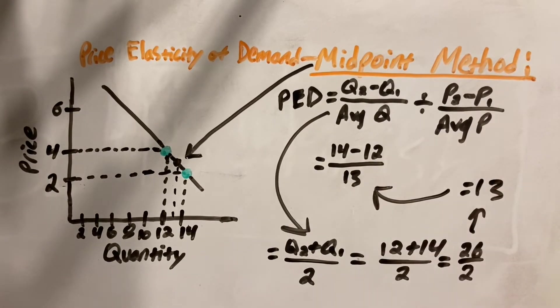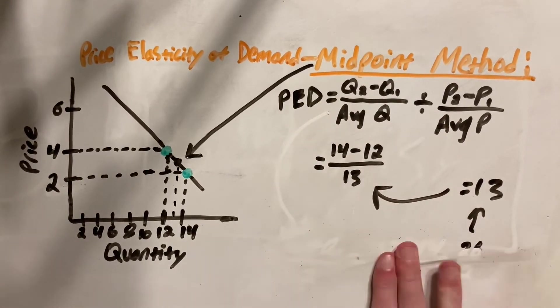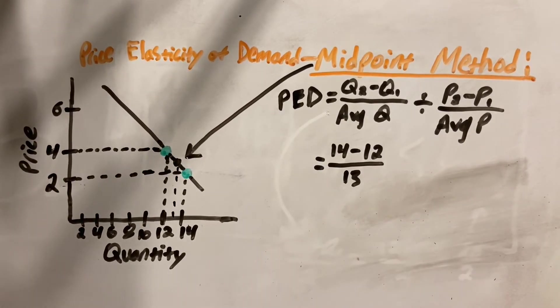I'll erase that because we don't want to take up too much space and make things look more complicated than they actually are. But just remember that's how you find the average for the average section of this formula.